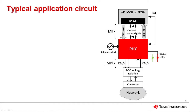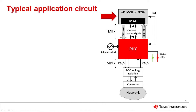This diagram shows a basic system-level implementation of an Ethernet physical layer connection. The PHY sits between the Media Access Control Layer device, or MAC, and the network connection. The MAC device can be either a microcontroller, processor, FPGA, or Ethernet switch.